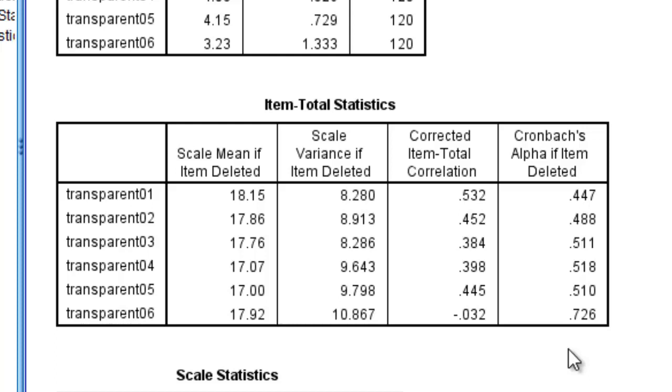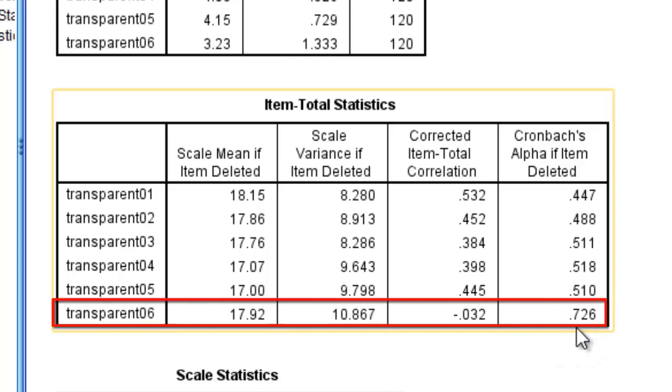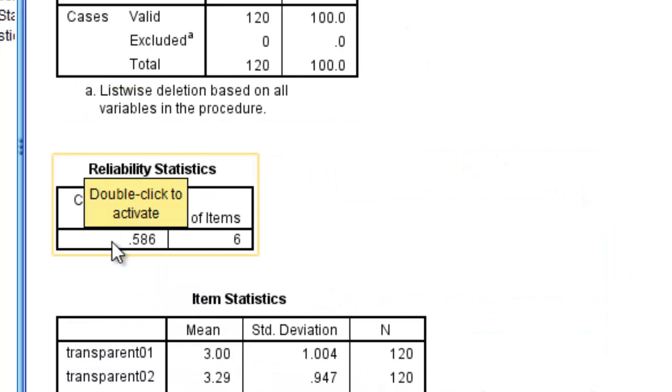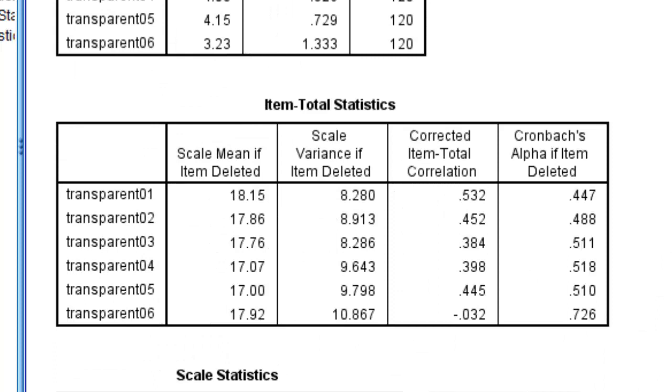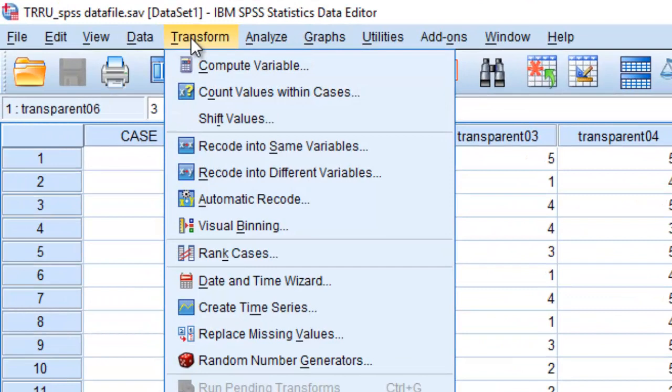The column that we're interested in is under this item total statistics table, specifically the last column. Cronbach's alpha if item deleted. This is very useful because it tells you what the Cronbach's alpha or coefficient alpha would have been if we had excluded one of these items. So across the six items, what we're looking for is the highest number. Here in this case, we can see that item number six shows a 0.726. What that means is that if we were to throw out item number six, coefficient alpha would be 0.726 instead of 0.586, which is currently the case.